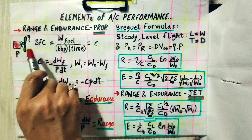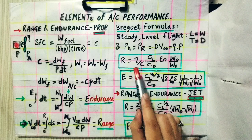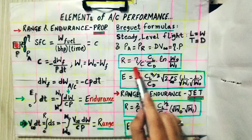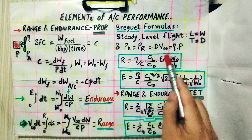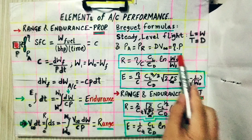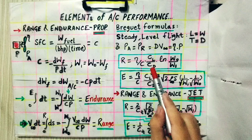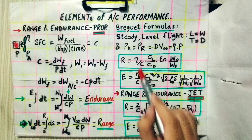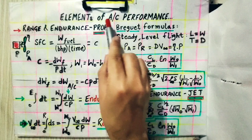For both range and endurance, the propeller efficiency η should be maximum and fuel consumption C should be minimum. Also, the initial weight W₀ should be high — meaning a large fuel load. For maximum range, C_L/C_D must be maximized; for maximum endurance, C_L^(3/2)/C_D must be maximized. These are important aircraft design points we previously covered in power required and thrust required analysis.